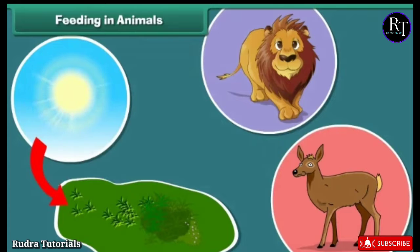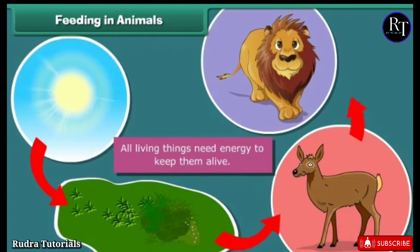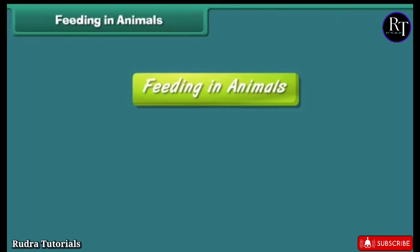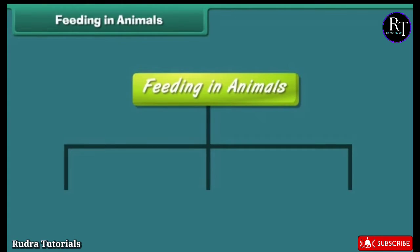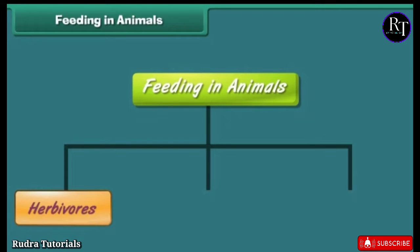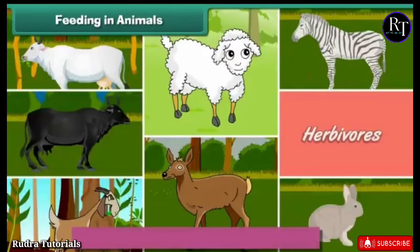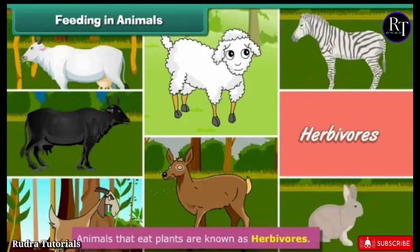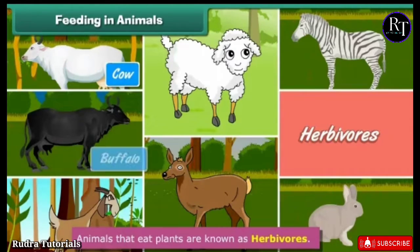As we all know, all living things need energy to keep them alive. They get this energy from food. On the basis of type of food, animals are of three types: herbivorous, carnivorous, and omnivorous. Animals that eat plants are known as herbivorous. Examples include cow, buffalo, goat, sheep, deer, zebra, and rabbits.